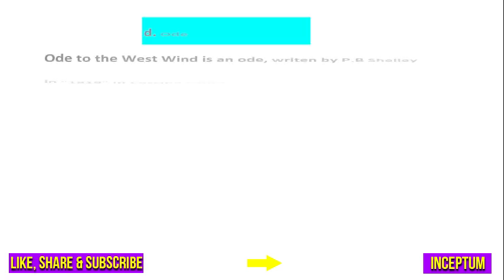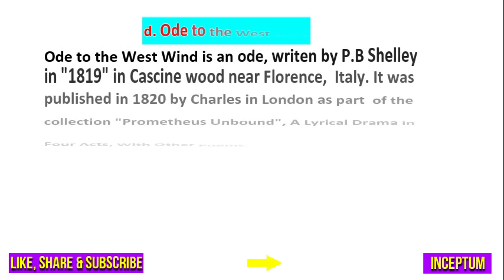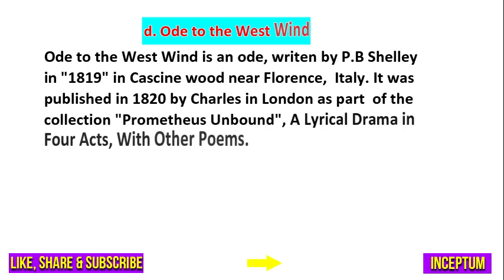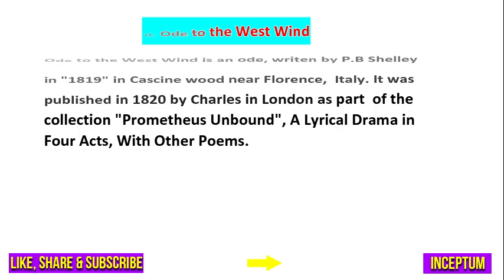And the right answer of this question is option D — Ode to the West Wind. Ode to the West Wind is an ode written by P.B. Shelley in the year 1819 in Cascine Wood near Florence, Italy. It was originally published in the year 1820 by Charles and London as part of the collection Prometheus Unbound, a lyrical drama in four acts with other poems.